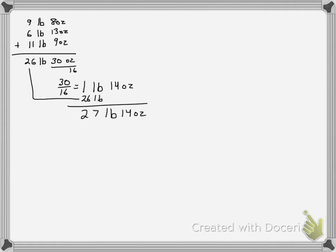The only thing that might be confusing is you're not writing it as 1 and 14/16 and reducing. Instead, you're taking the whole number as your larger unit and the remainder stays as your smaller unit of measurement. Hopefully that's clear. Now let's talk about subtracting compound measures.